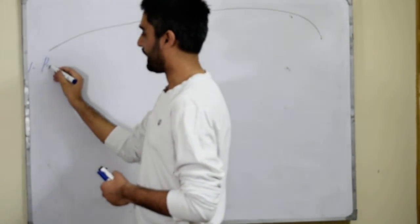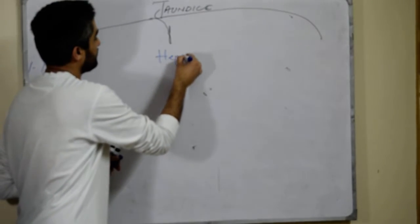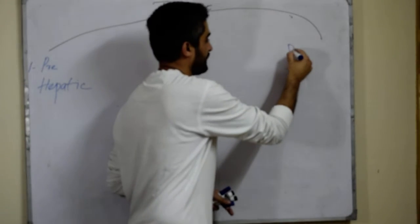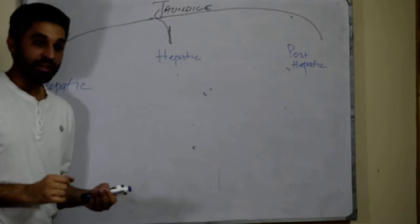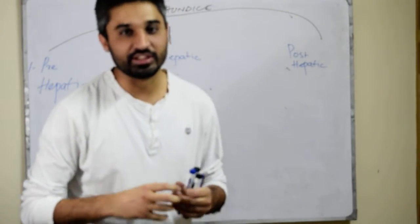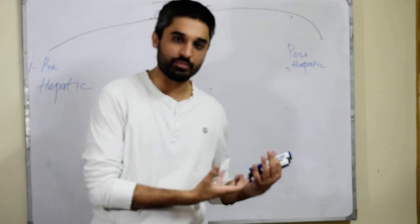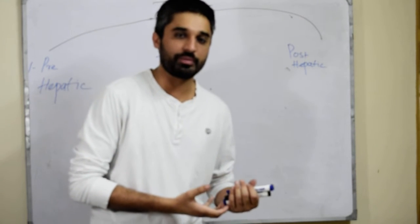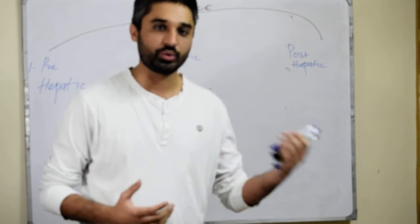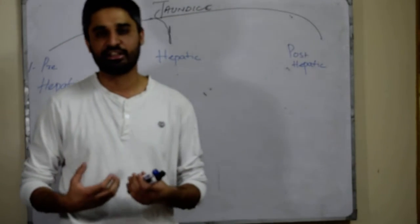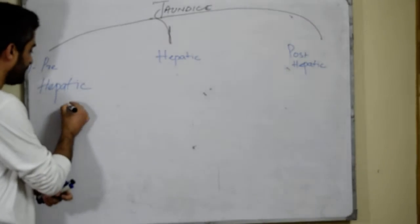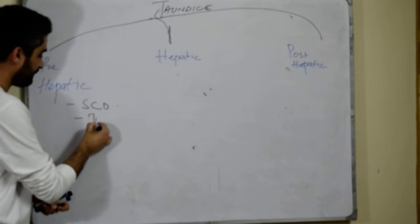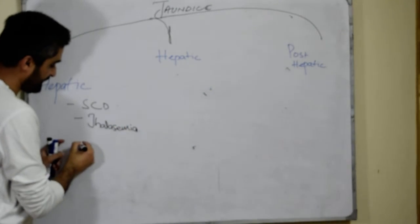Number one: pre-hepatic jaundice. Number two: hepatic jaundice. And number three: post-hepatic jaundice. Coming to pre-hepatic jaundice — whenever there is increased destruction of RBCs, the hemoglobin molecules keep coming out from the RBCs and keep splitting into heme and globin portions. The heme portion has a tendency to form bilirubin. So in pre-hepatic jaundice, the RBCs have an increased tendency to break down, as in sickle cell disease, thalassemia, and hemolytic anemias.